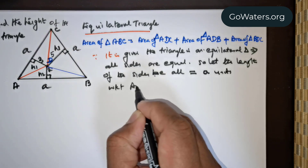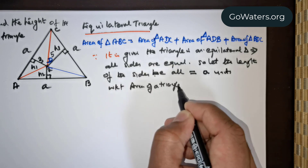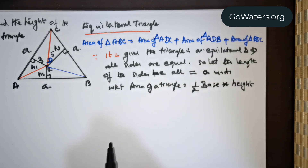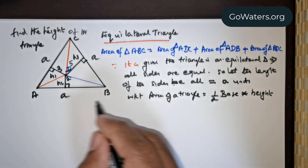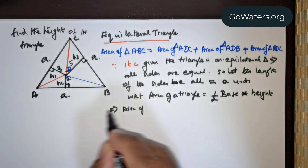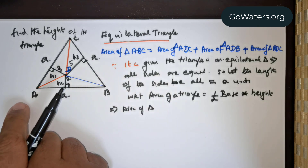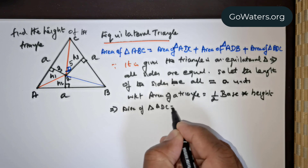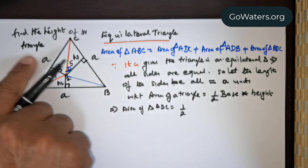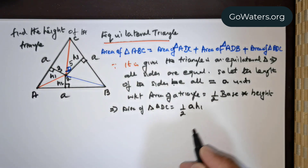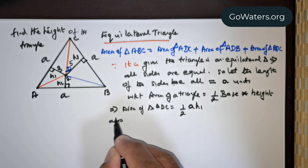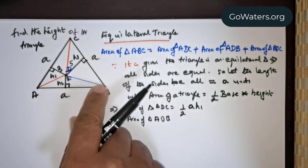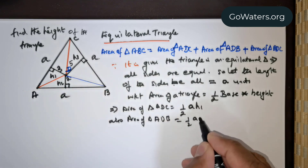Now we know that the area of a triangle is given as half times base times height. Using this formula, the area of triangle ADC is equal to half times A times H1. Also, the area of triangle ADB is half times A times H2, base times height.